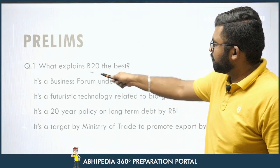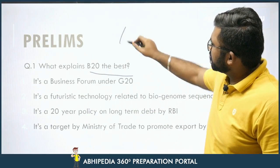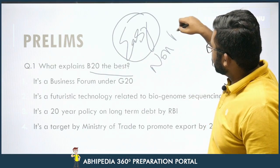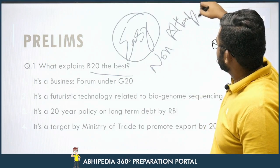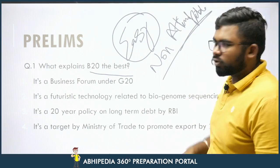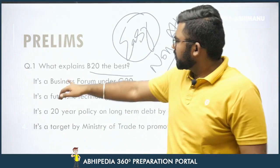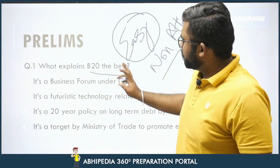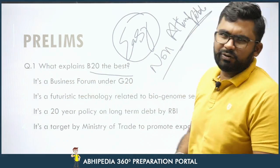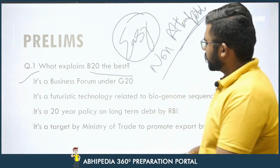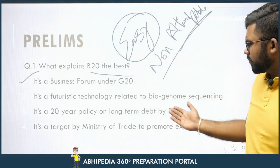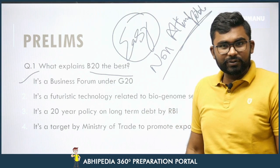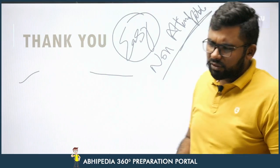There is a simple practice question: What explains B20 the best? This question falls in the easy category if you know the topic, otherwise it is non-attemptable. You can try to pause the video. The answer is: it is a business forum under G20. The other options would confuse you — for example, 'a target by the Ministry of Trade to promote exports by 20%.' You have to read the question carefully and be aware of such tricky options.